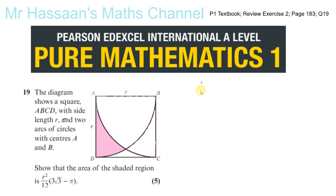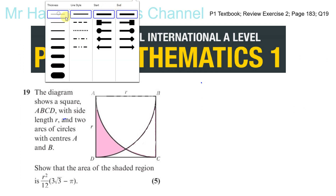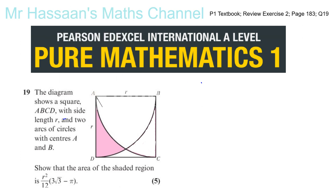In order to do this, what comes to mind is to draw a line from A to this point here, which I'll call point P — where this line and that line meet. This forms a sector of a circle with centre A.